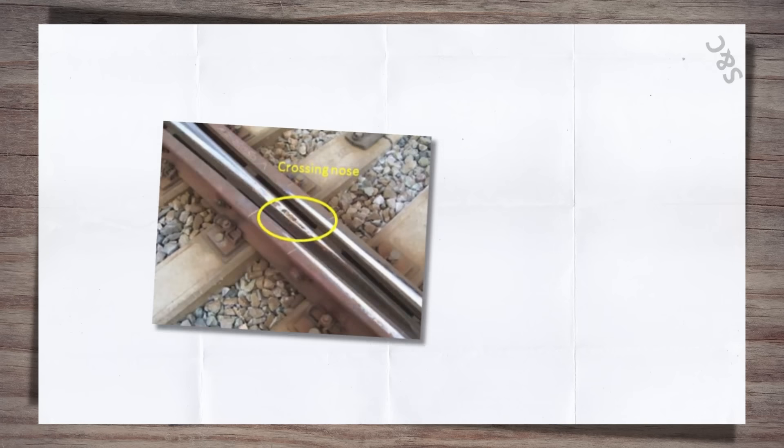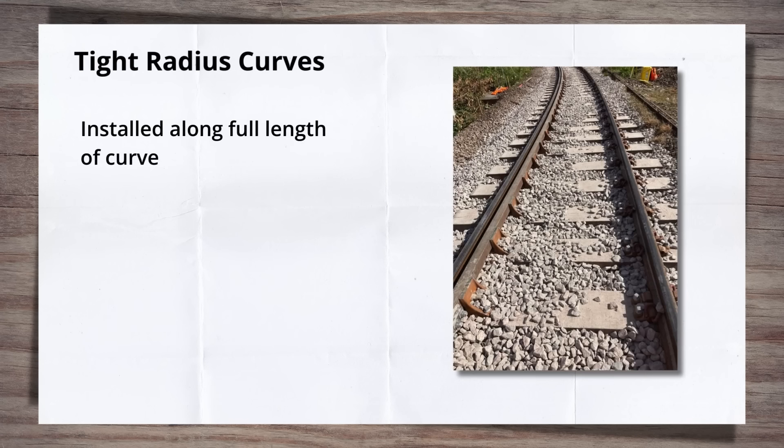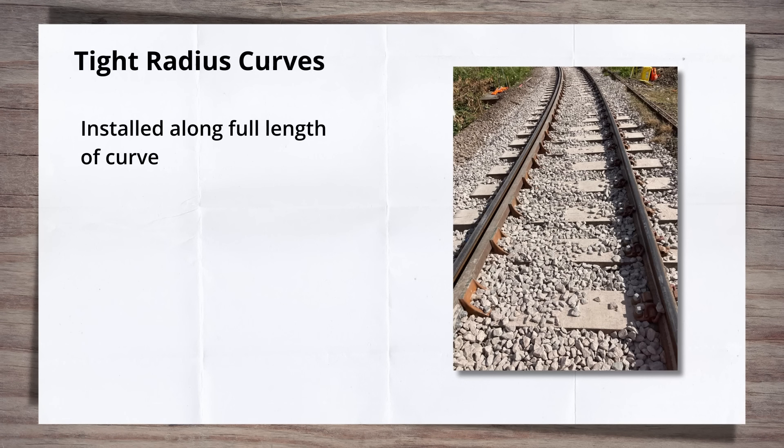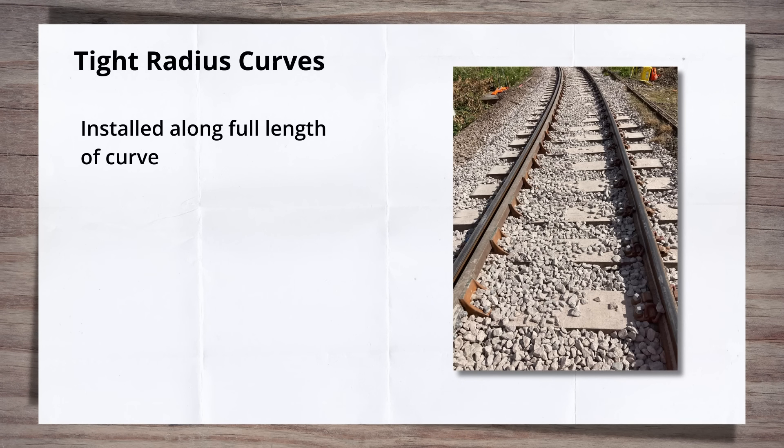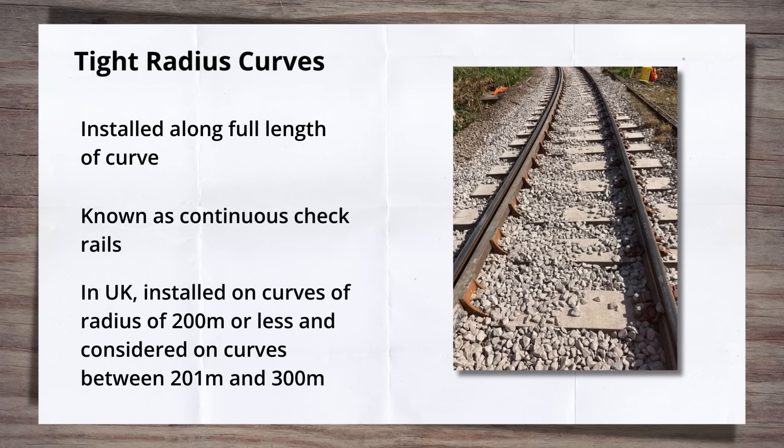Tight radius curves. The second place checkrails are found are on curves of tight radius. As they are installed along the full length of the curve that requires them, they are also known as continuous checkrails. In the UK, any curve on a passenger line with a radius of 200 metres or less is required to have a continuous checkrail, with installation also considered when the curve is between 201 and 300 metres in radius.